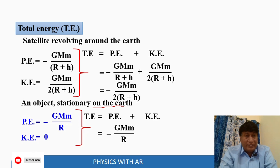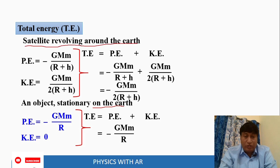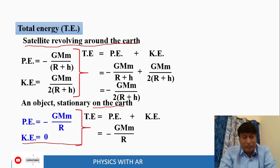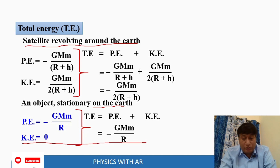So whenever the satellite is revolving around the earth, we get one expression for total energy, and when it is on the surface of the earth we get another. These are the two equations we can obtain.